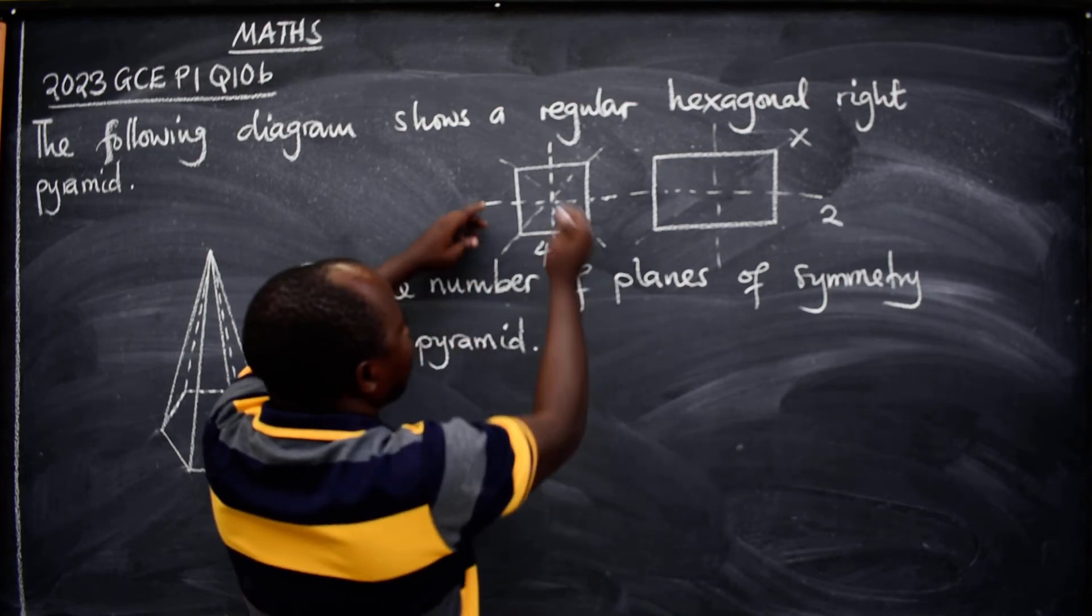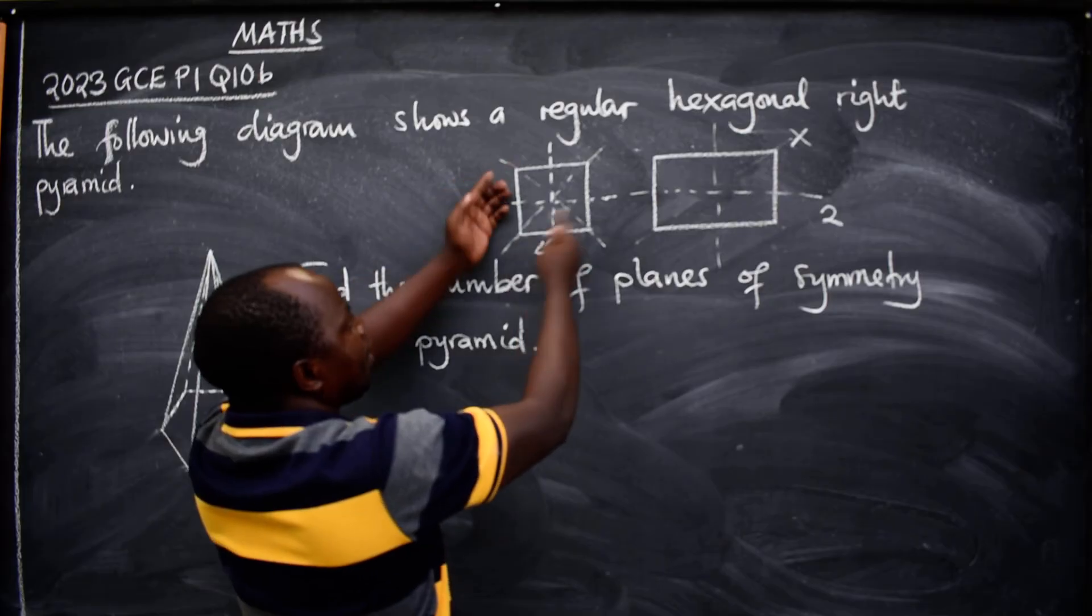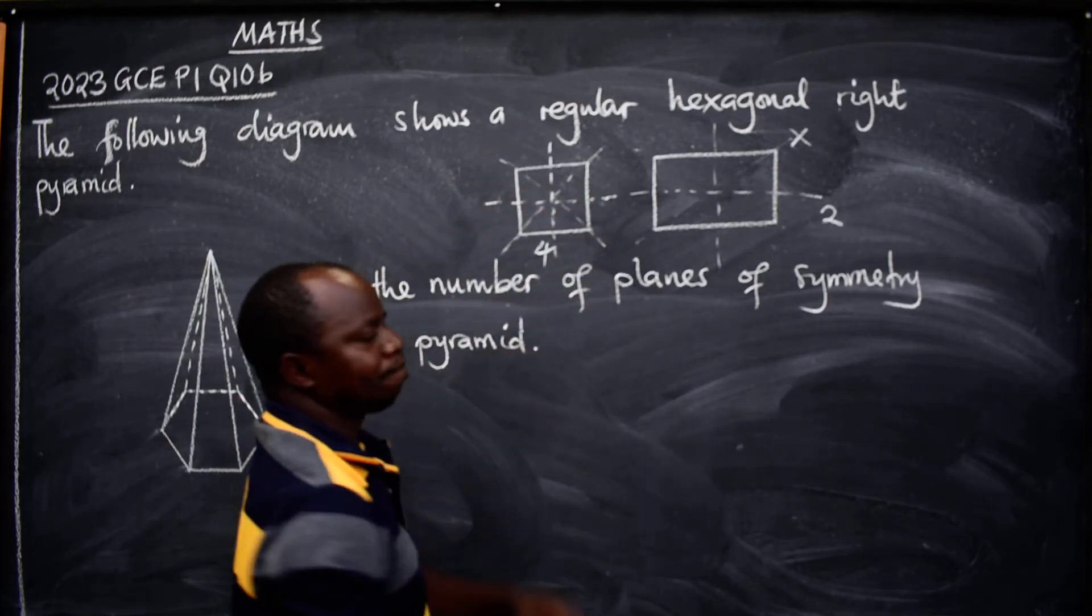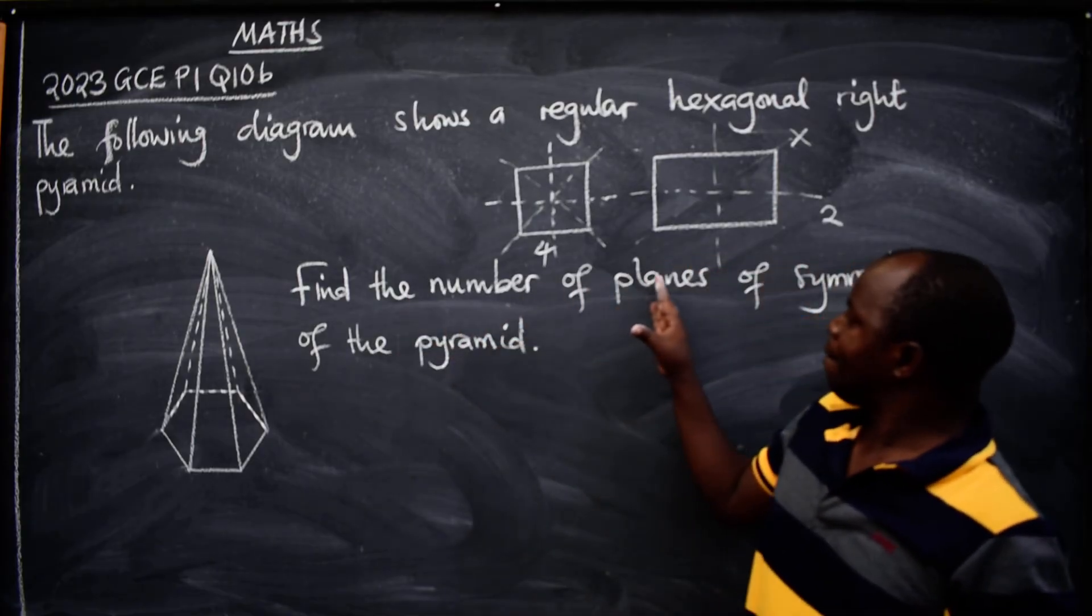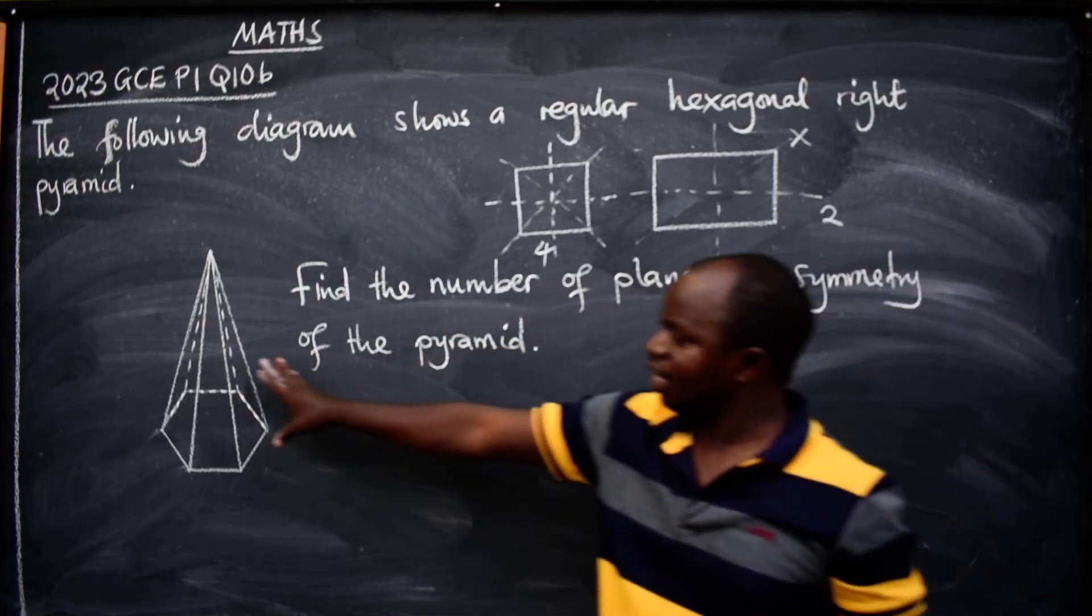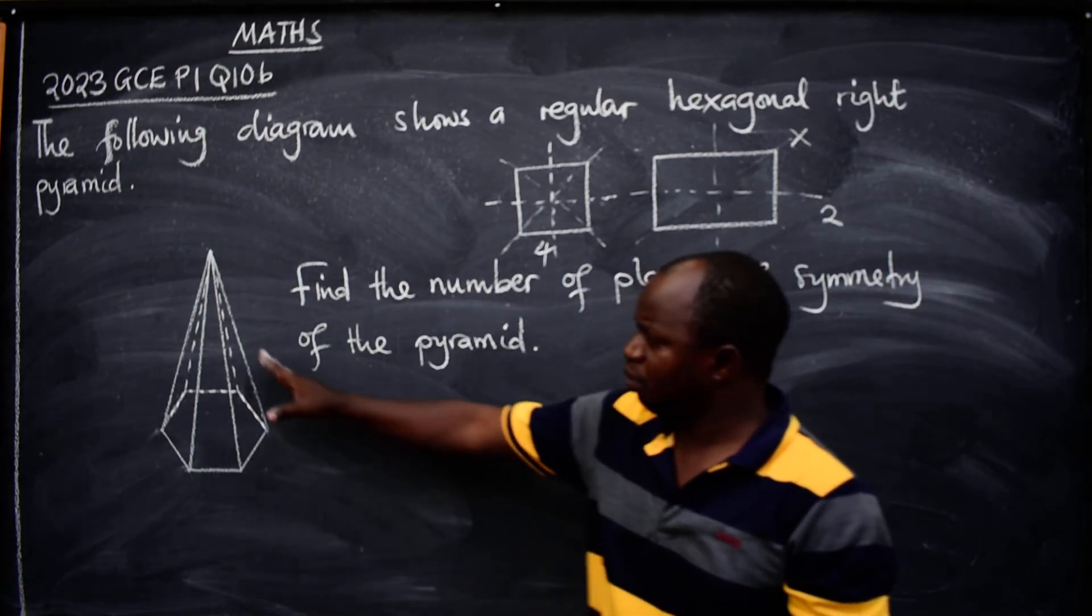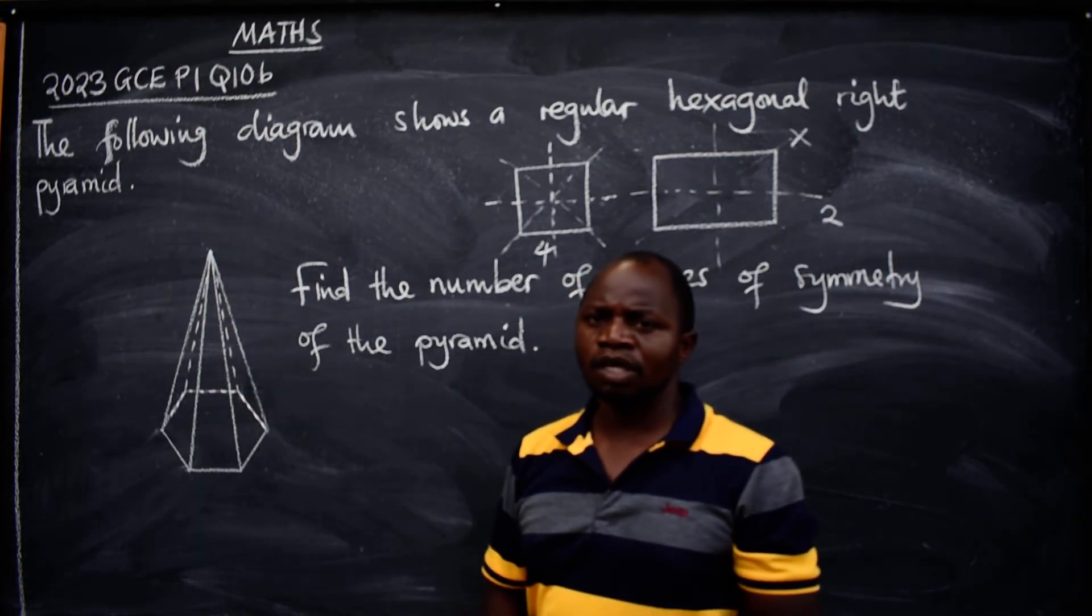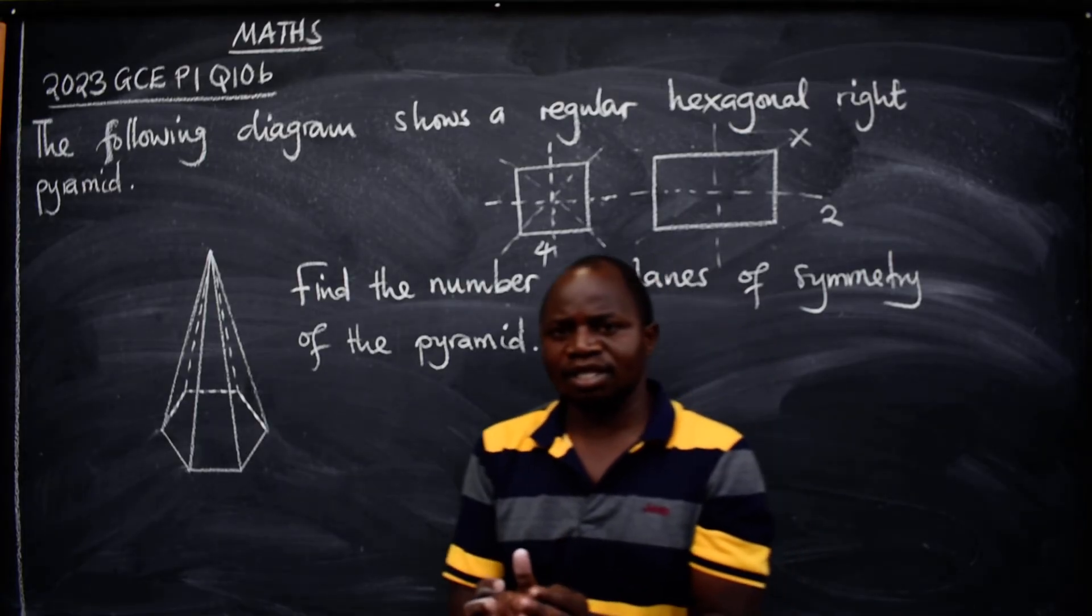But all these that you are seeing here, if I fold this it will come here and overlap. This one will come here like this, like this. Okay, so now under 3D we have planes of symmetry. Now look at the diagram that we have. How many can we fold here? So to know the exact number, you look at the base that has been given.